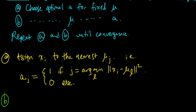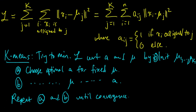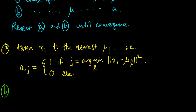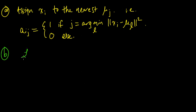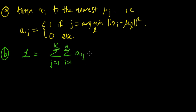Now we need to choose the optimal centers for given assignments — optimal in the sense that it minimizes the objective function. Let's write down this objective function and minimize it for fixed assignments with respect to each of the μ's. L is the sum over j from 1 to k and i from 1 to n of a_{ij} times the squared distance from x_i to μ_j.